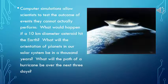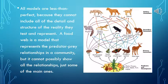Computer simulations allow scientists to test the outcome of events they cannot actually perform. For example: What would happen if a 10-kilometer diameter asteroid hit the Earth? What will the orientation of planets in our solar system be in a thousand years? What will the path of a hurricane be over the next three days? All models are less than perfect.